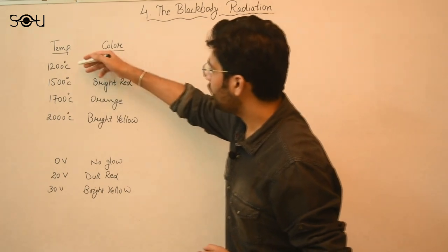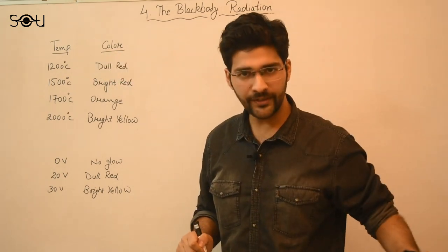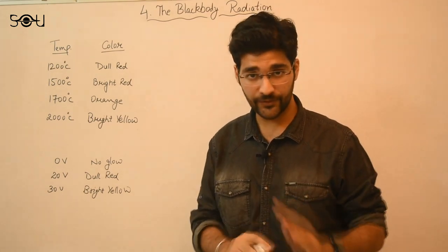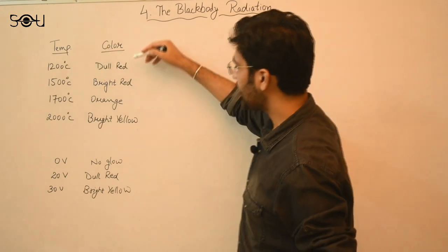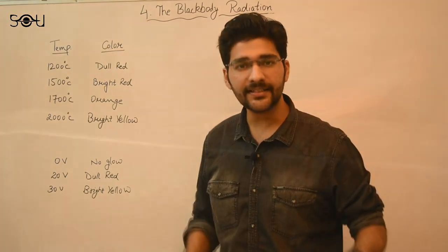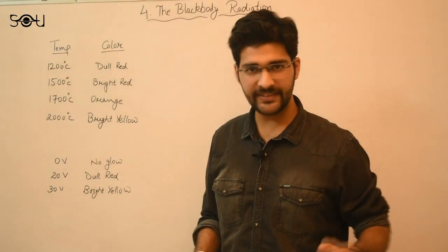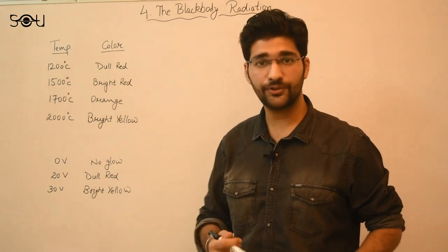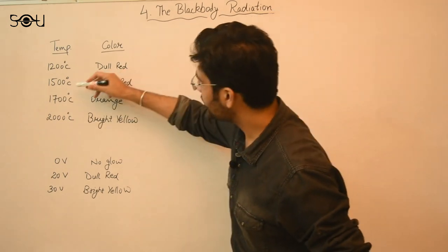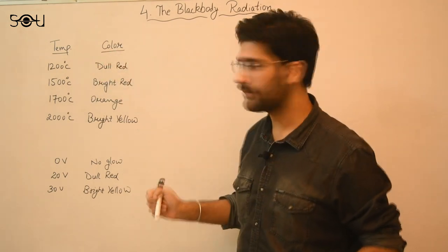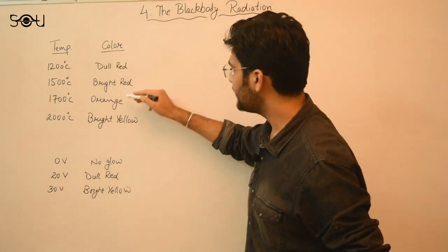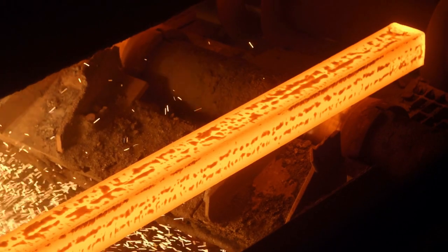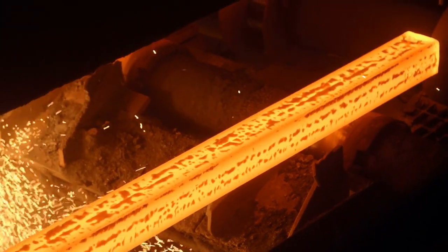Now suppose I start heating that metal piece to 1200 degrees Celsius. When I brought it into the dark room at room temperature, say 30 or 35 degrees Celsius, there was no glow. At 1200 degrees Celsius, I see a dull red color. I keep increasing the temperature and see that as the temperature increases, the color of the glow also changes. At 1500 degrees Celsius, I see a bright red color. Then at 1700 degrees, I see an orange color. And finally at 2000 degrees Celsius and beyond, the color changes from orange to bright yellow and ultimately white.